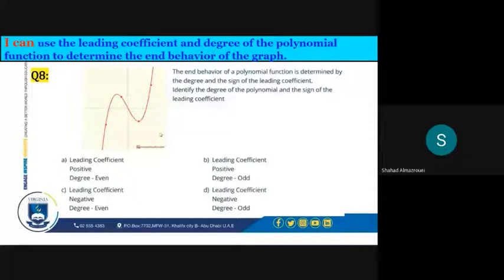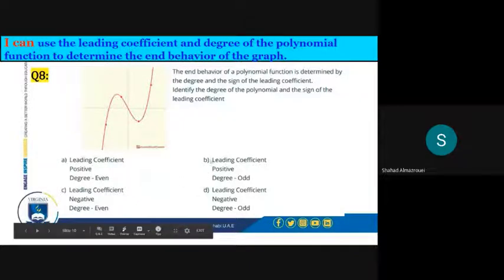And since the other half which is on the left side is going on the opposite direction which is going down and on the left, that means that the degree is odd. So the answer is B: leading coefficient is positive and the degree is odd.